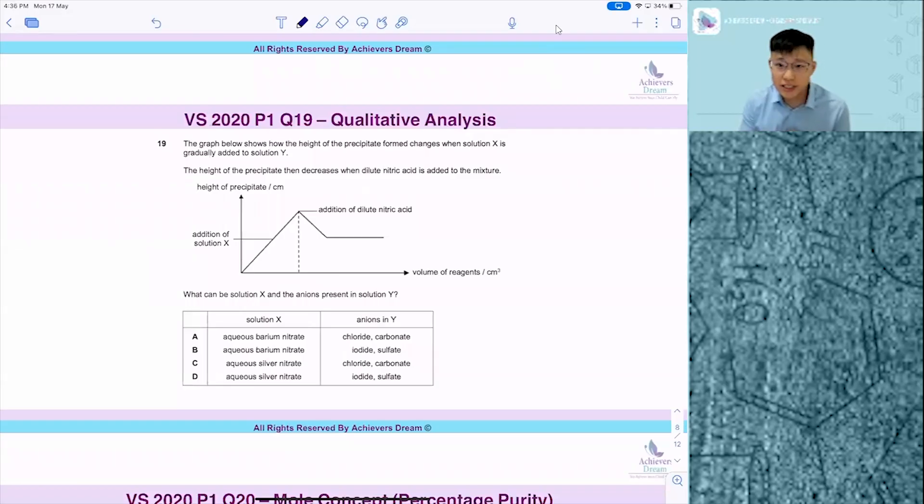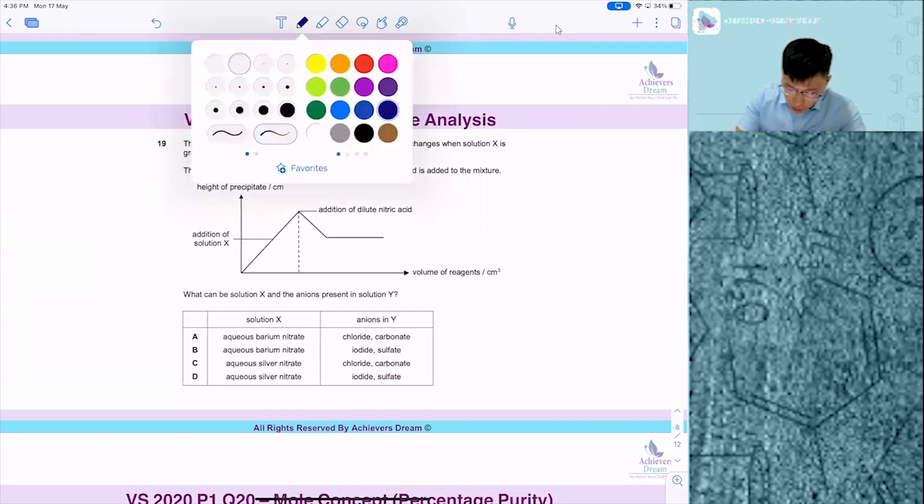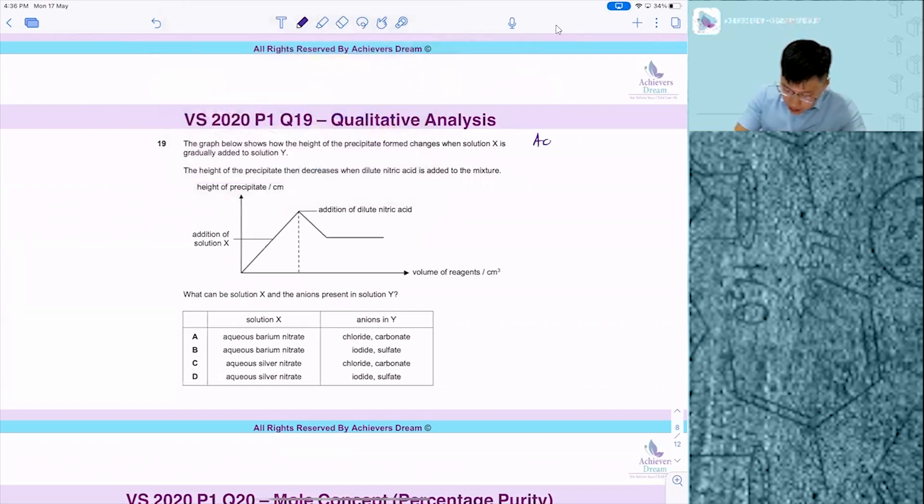Question number 19 is testing you on qualitative analysis. A couple of concepts you need to learn in order to understand this question well. Number one, you need to understand acid-base. You need to understand salt - what is soluble, what is insoluble. And lastly, qualitative analysis.